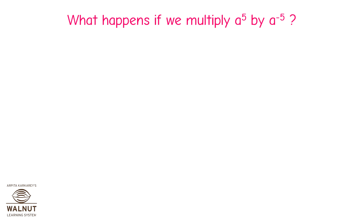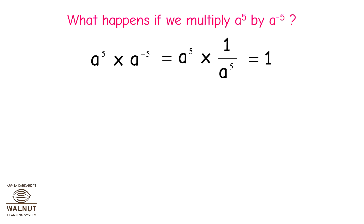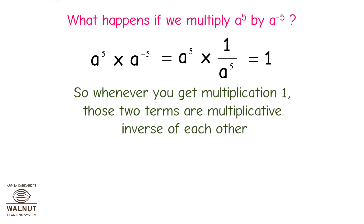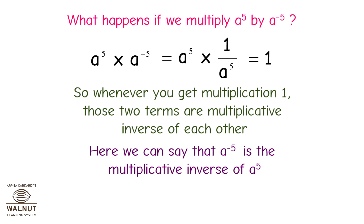What happens if we multiply a raised to 5 by a raised to minus 5? a raised to 5 into a raised to minus 5 is equal to a raised to 5 into 1 upon a raised to 5, which is equal to 1. So whenever you get a product of 1, those two terms are multiplicative inverses of each other. Here we can say that a raised to minus 5 is the multiplicative inverse of a raised to 5.